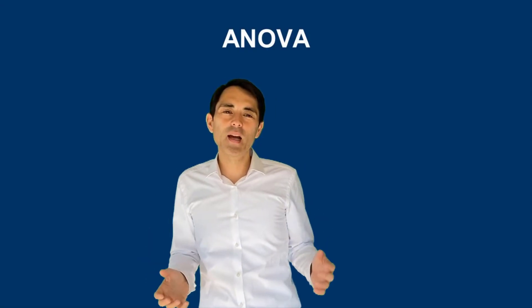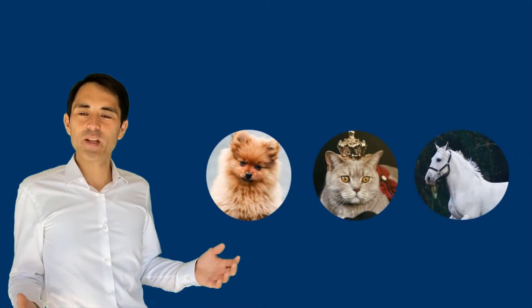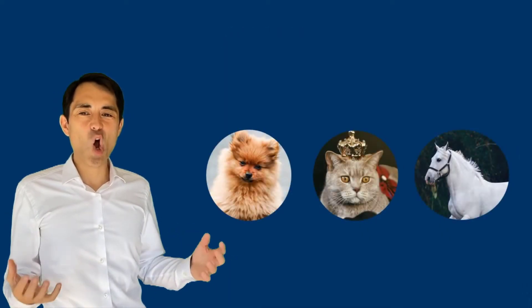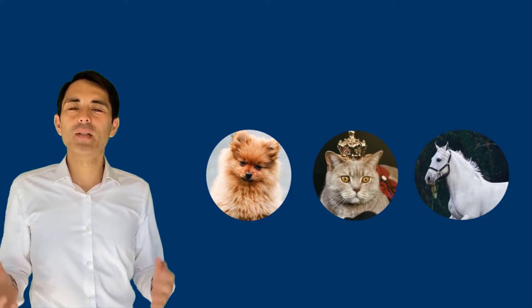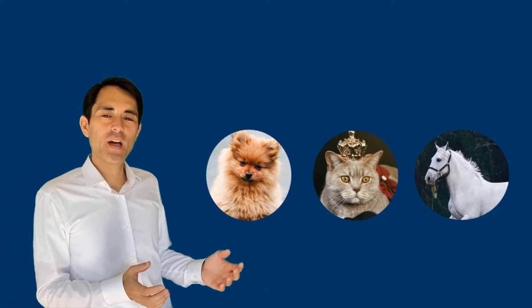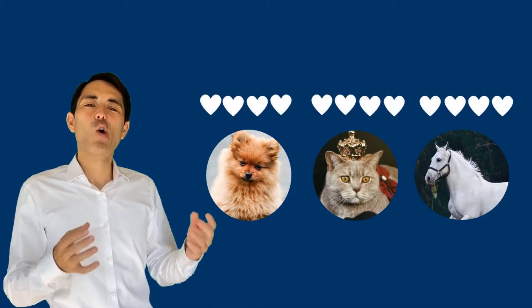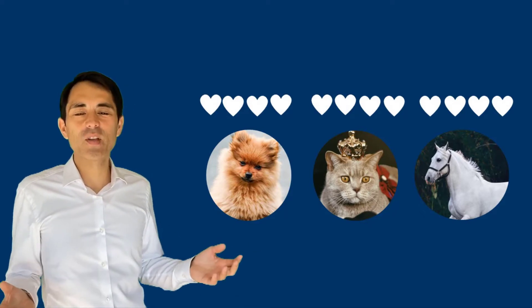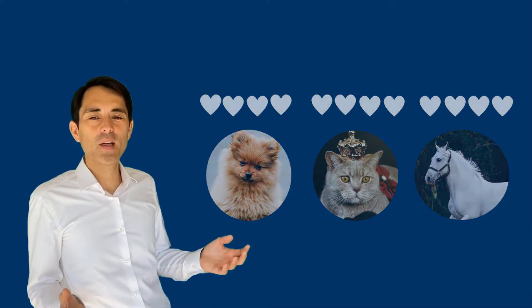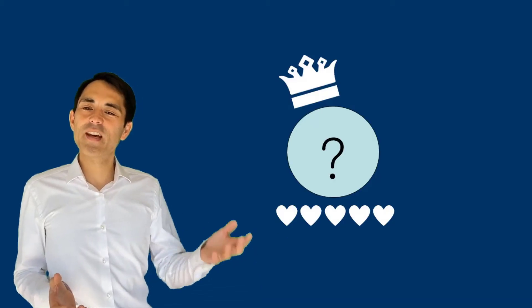Let me begin with an example for ANOVA. You can see the pictures — a dog, a cat, a horse. A typical ANOVA question would be: are these animals equally loyal to humans? Or a more specific question could be: which animal is more loyal than the other animals?